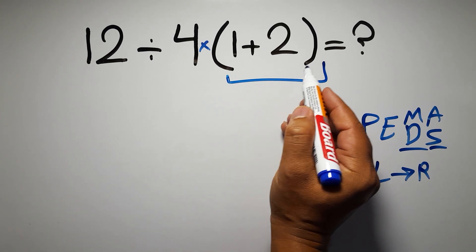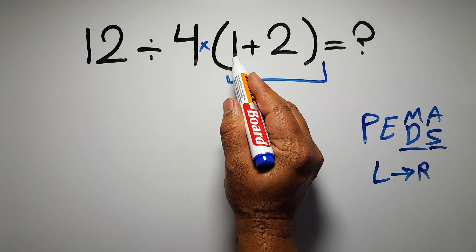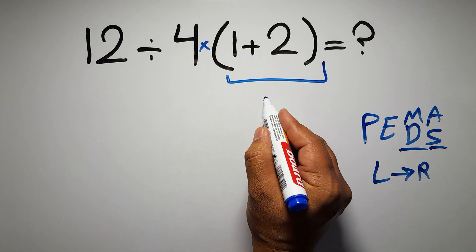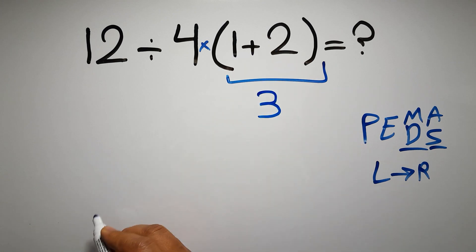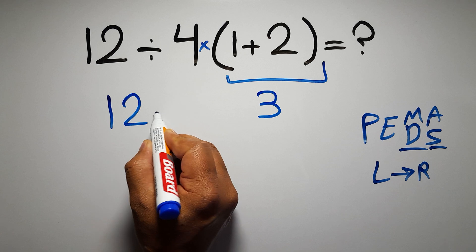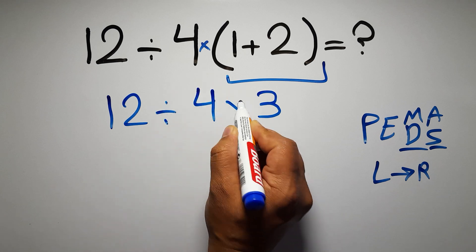So, first these parentheses. Inside these parentheses, we have 1 plus 2, which equals 3. So, we have 12 divided by 4 times 3.